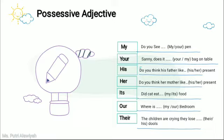More examples: 'Do you think his father like his present?' — because it's 'father', use 'his'. 'Do you think her mother like her present?' — because it's 'mother', use 'her'. 'Did cat eat its food?' — use 'its'. 'Where is our bedroom?' — use 'our'. 'The children are crying. They lose their dolls.' — because the subject is 'they', the possessive adjective is 'their'. Remember: my=I, your=you, his=he, her=she, its=it, our=we, their=they.